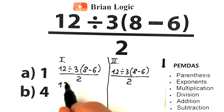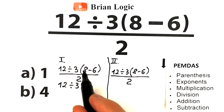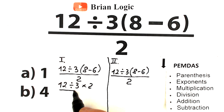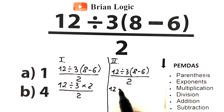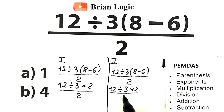So we have 12 divided by 3, then times (8 minus 6) which gives us 2, and we divide all of these by 2. We have the same expression on both sides: 12 divided by 3, times 2, divided by 2. In both interpretations we have absolutely the same first step.